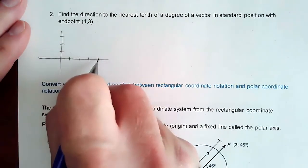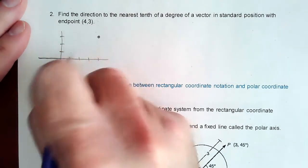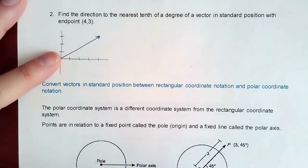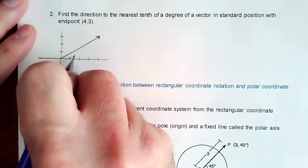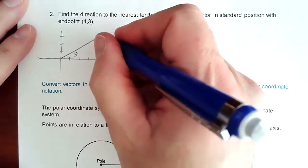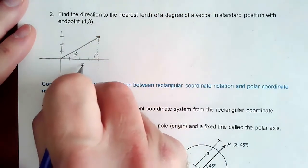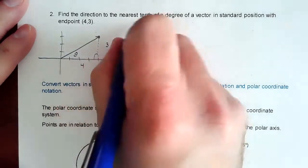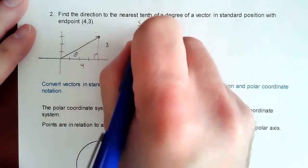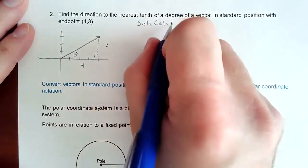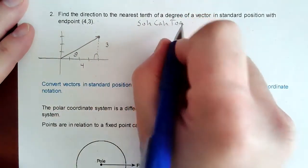So we're out 4, up 3. There's our magnitude. So if there's our magnitude, there's our vector. We already know the magnitude is 5. But we're looking for this angle right here. So I'm going to drop down, make my right triangle. I know I'm out 4 and I'm up 3. So what I have going on now is trig because I'm trying to find an angle related to size.